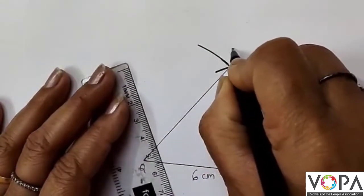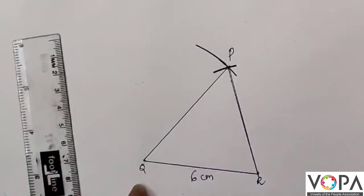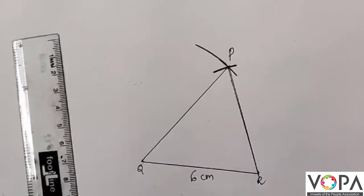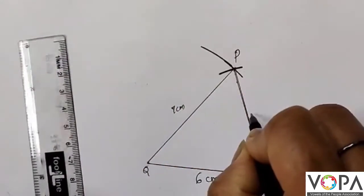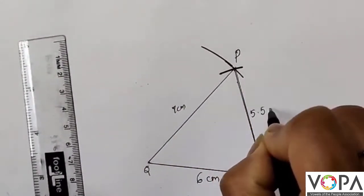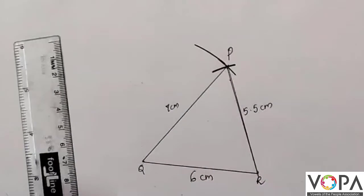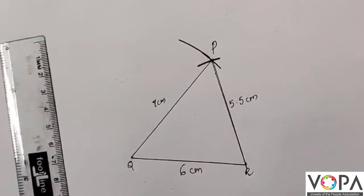Here P, Q, R - this is the required triangle. This is 7 cm and this is 5.5 cm. We have written all the measures here.